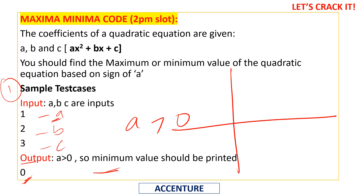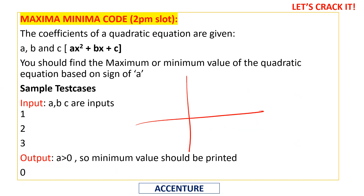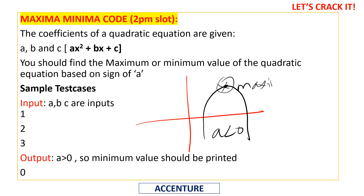If a is greater than zero, the parabola opens upward and has a minimum value. If a is less than zero, the parabola opens downward and has a maximum value. So the sign of a determines whether we find a maximum or minimum.